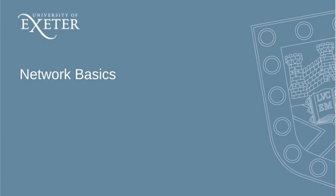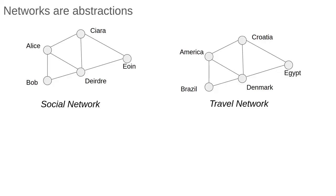This video will introduce some of the basic concepts in network theory. Here are examples of two networks. On the left is a social network. This might represent online friendships between a group of five people. On the right we have a network of connections between countries. For example, a connection could represent a non-stop flight between the two countries.